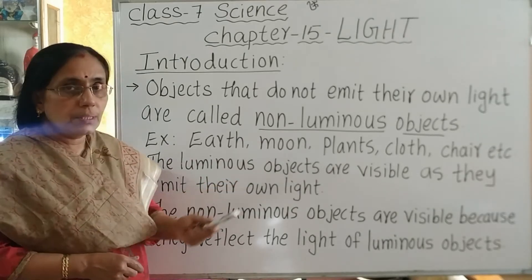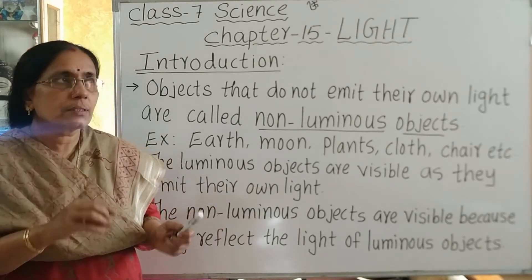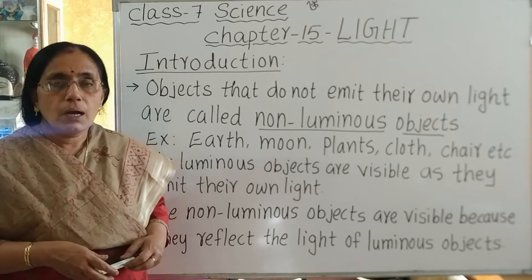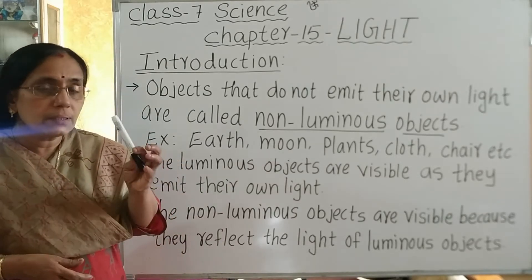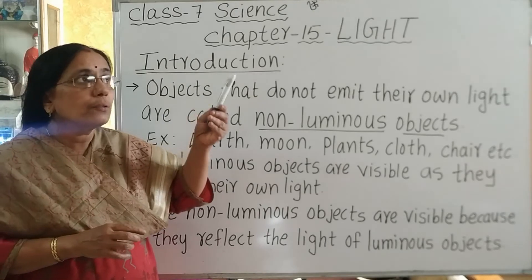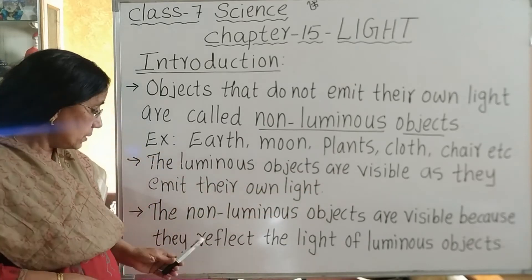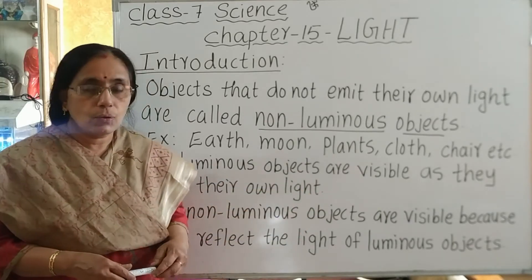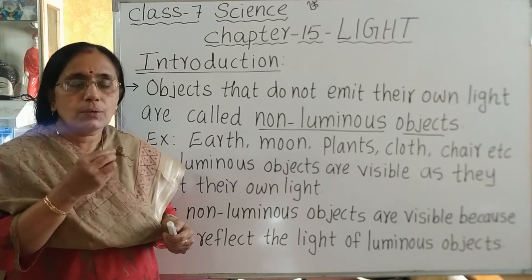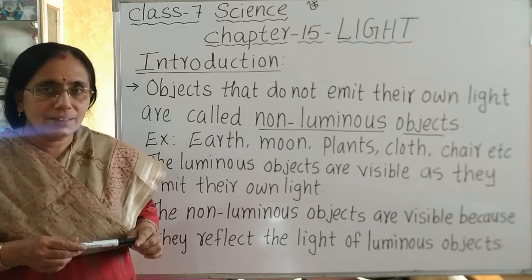Luminous objects are visible to us because they emit their own light — for example, a working tube light. But how do we see non-luminous objects? For example, a pen is a non-luminous object. We can see it because it reflects the light of luminous objects. The details of how reflection works will be covered in this chapter.